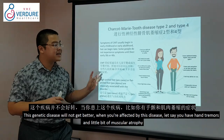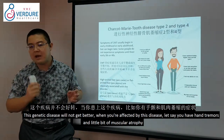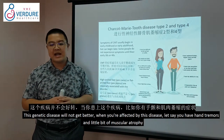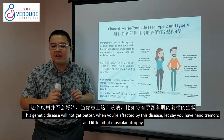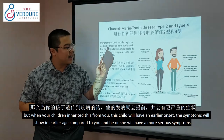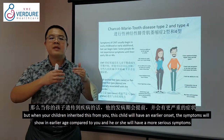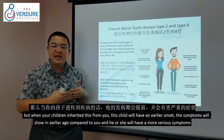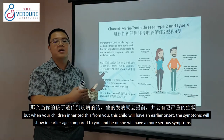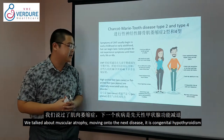With genetic diseases, it will not get better. When you are affected and pass it on to your children through inheritance, the child will have an earlier onset — the symptoms will show earlier than yours — and he or she will have more serious symptoms.